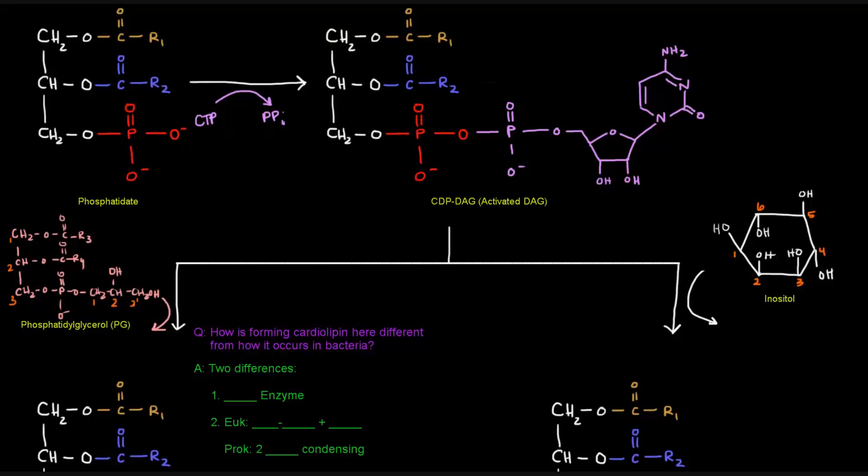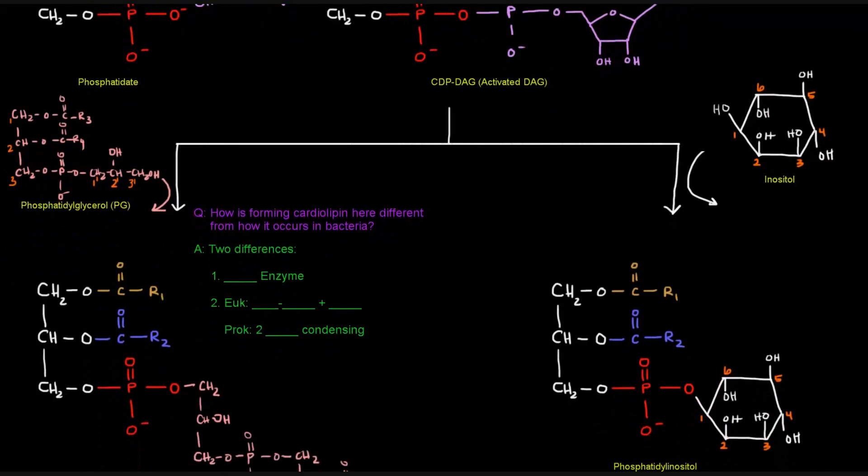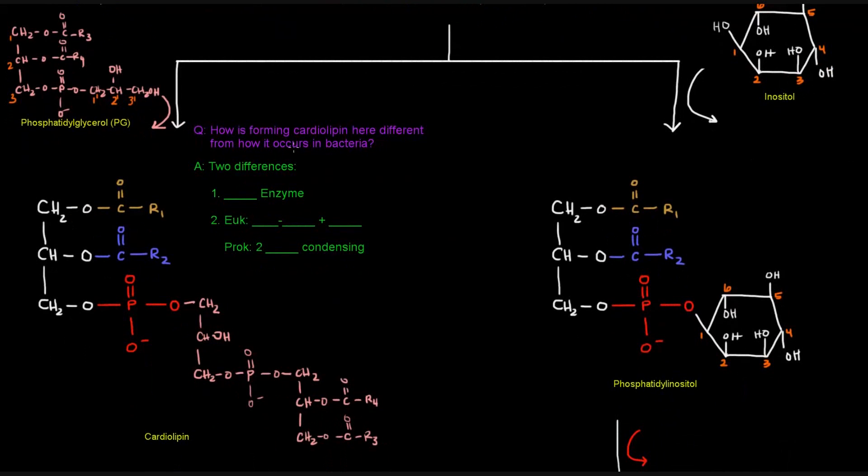And so here what ends up happening is that the 3 prime OH ends up being the one that's connected to the phosphate group while the CMP group falls off.